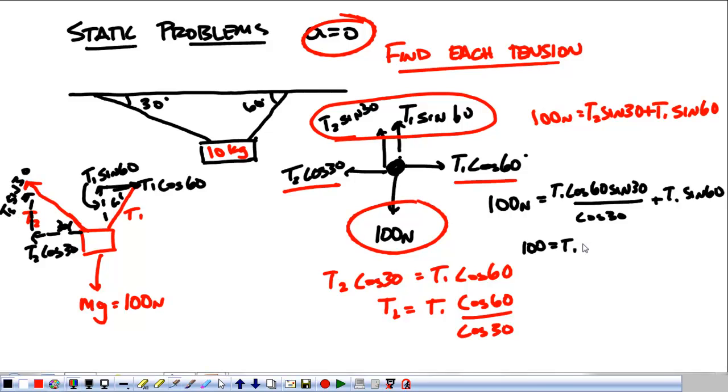So, I have 100 equals T1 times the cosine of 60, which is 0.5, times the sine of 30, which is 0.5, divided by the cosine of 30, which is 0.87, plus T1 times 0.87. So, 100 equals 0.5 times 0.5, divided by 0.87.